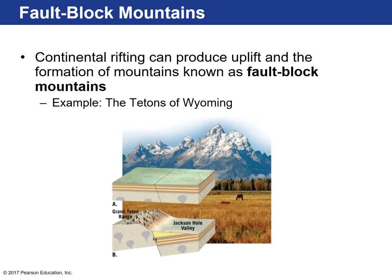Fault Block Mountains. Mountains can be generated through compressional forces, but you can also create mountains through rifting or tensional forces — we call these Fault Block Mountains. If you have a fault where the hanging wall goes down and the foot wall goes up — a normal fault as a result of tensional forces — older rocks move up toward the surface as this block falls, creating mountains. The Grand Teton Range of Wyoming is the result of tensional forces.